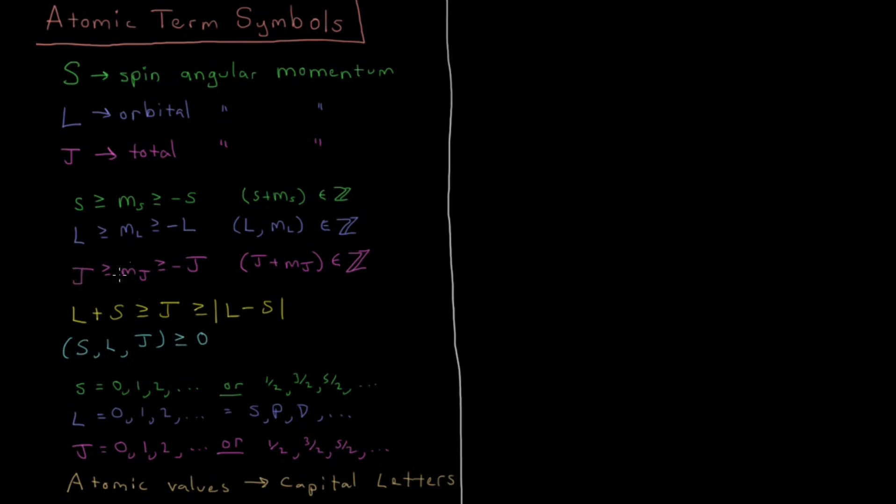And then j is going to work the same way. j is going to be able to have half integer values as well, and then has 2j plus 1 possible values of m sub j going from j to minus j, decreasing by an integer every time. Then the values of j, which are allowed based on the values of l and s, are that j has to be somewhere between the sum, l plus s, and the absolute value of the difference, l minus s.